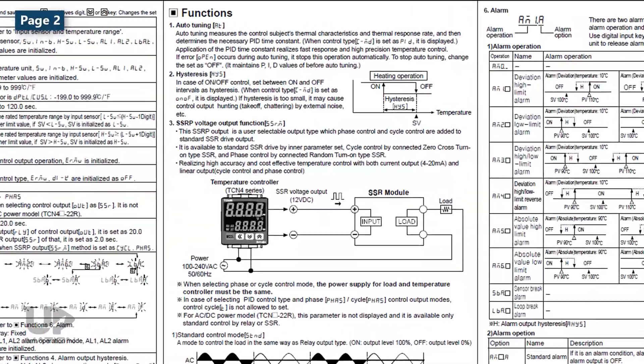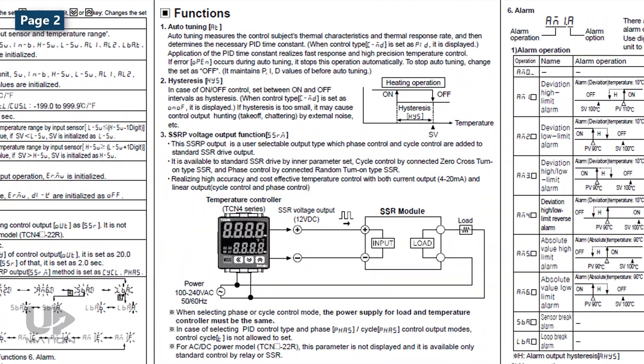In the middle, there is a description of the available functions or control types. For example, in our case, we should select this function as we have an SSR to connect to the PID controller output.